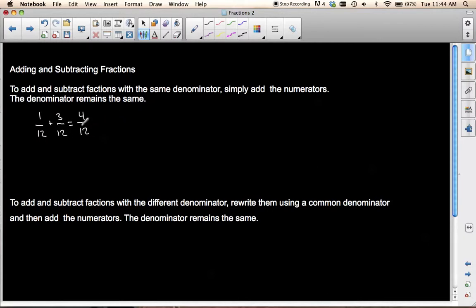Once we have 4 over 12, we need to ask ourselves, can we reduce? Is there a number that both of these are divisible by? And in this case, both 4 and 12 are able to be divided by 4. So if I divide both by 4, I end up with 1 over 3.